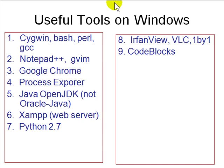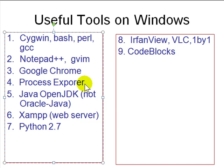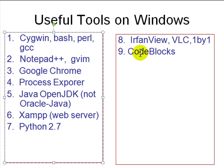Useful tools to install on Windows: Cygwin with Bash, Perl, and GCC for compiling. Notepad++, Vim, or Emacs as editors. Google Chrome for safe browsing. Process Explorer to find rogue processes. Use Java OpenJDK rather than Oracle JDK to avoid bugs and vulnerabilities. XAMPP as a web server. Python 2.7 (used by many applications like Vim). VLC media player. IrfanView for image viewing. Code::Blocks as a free C debugger.